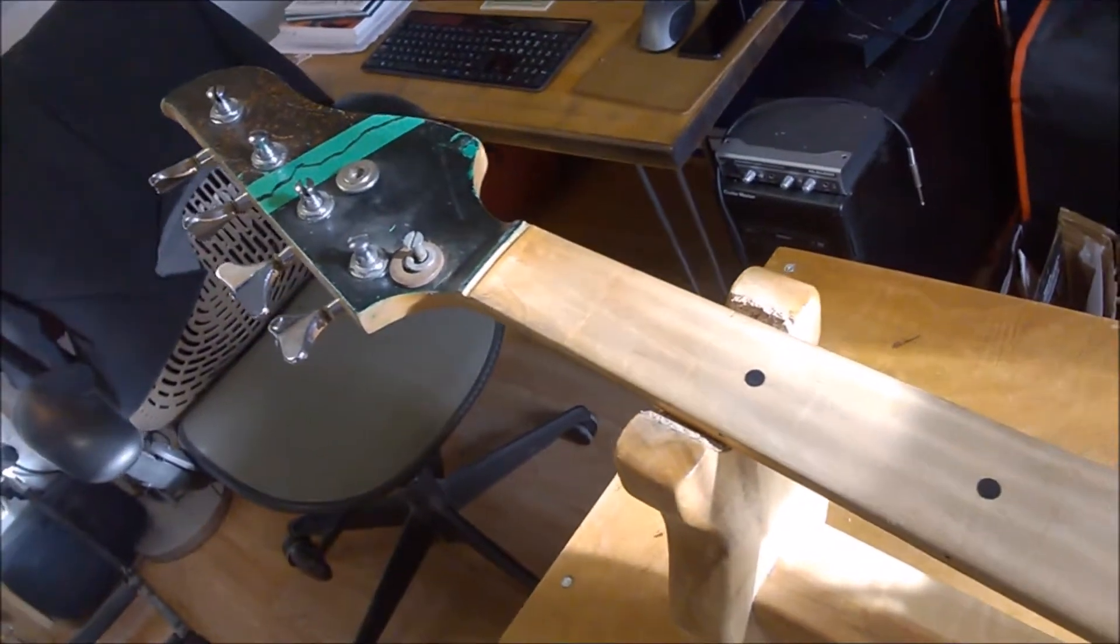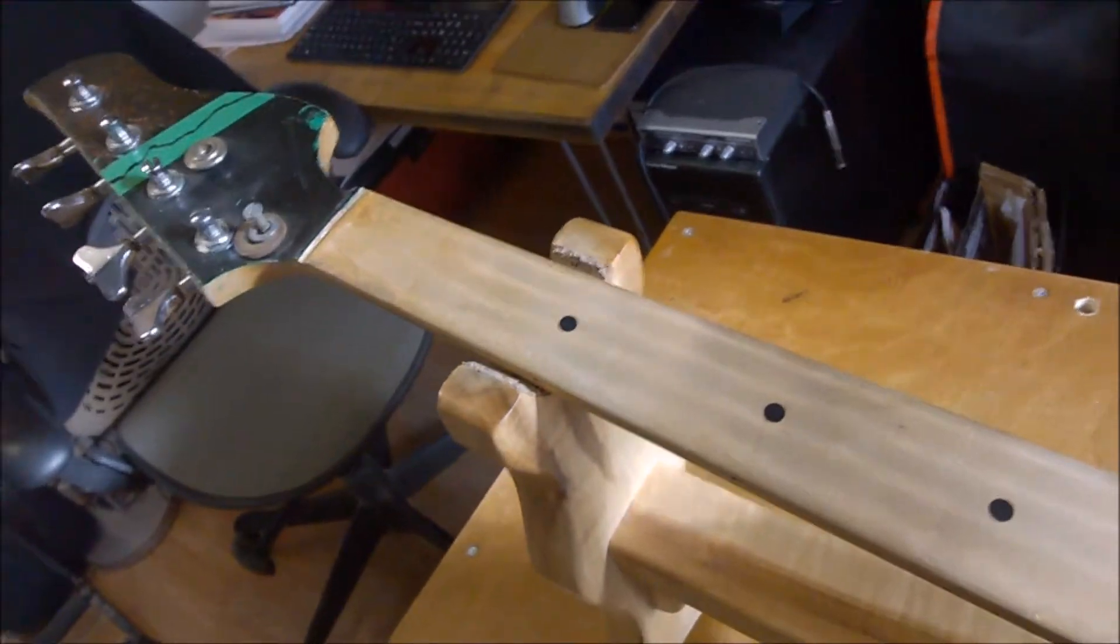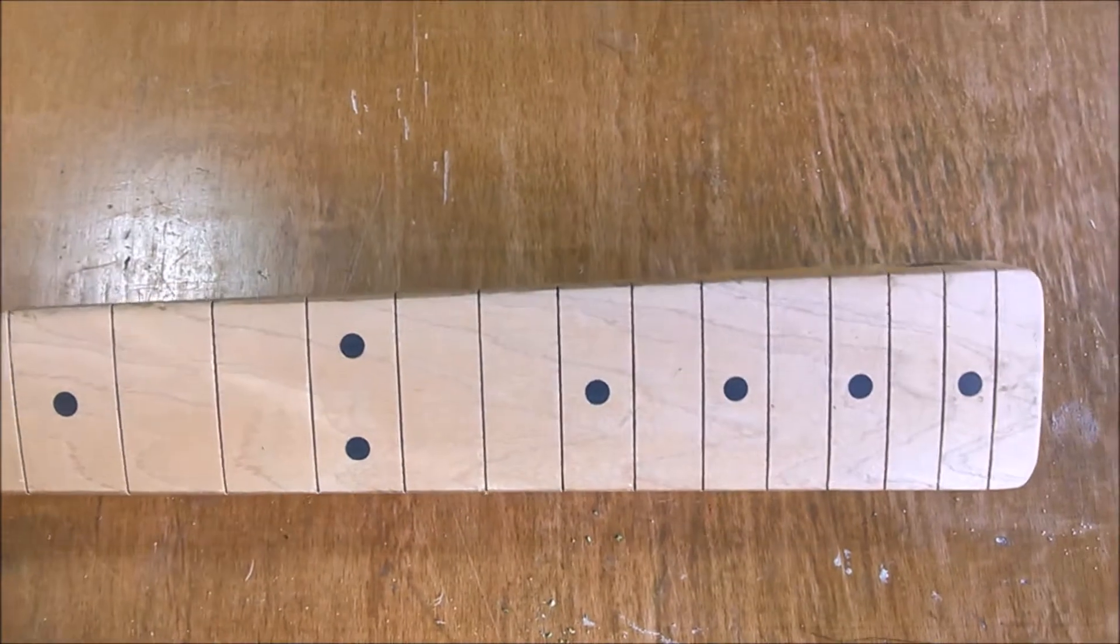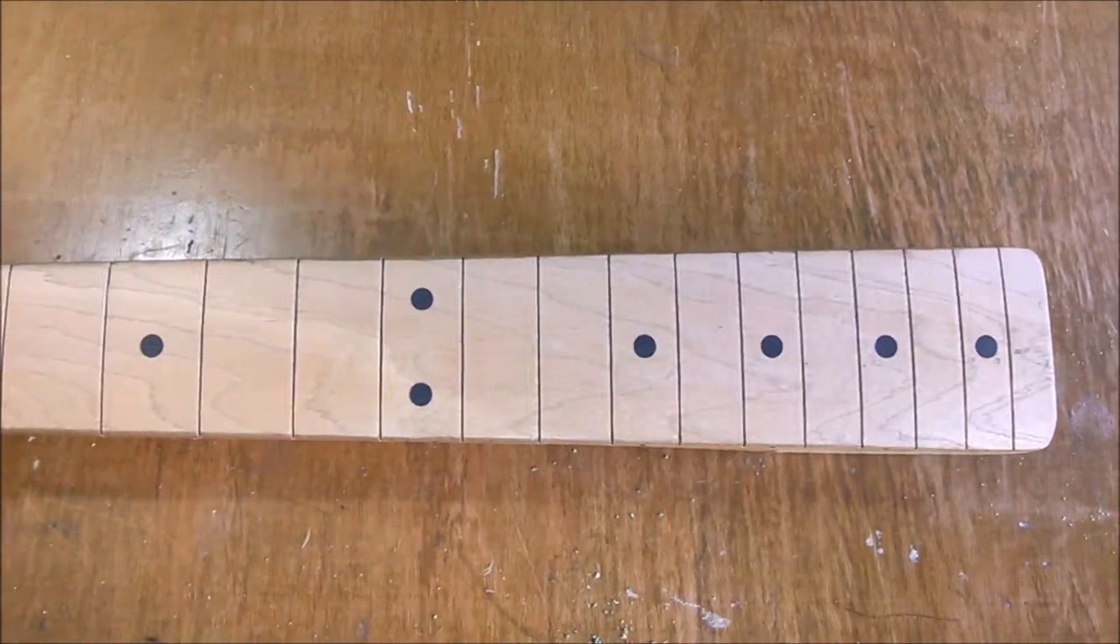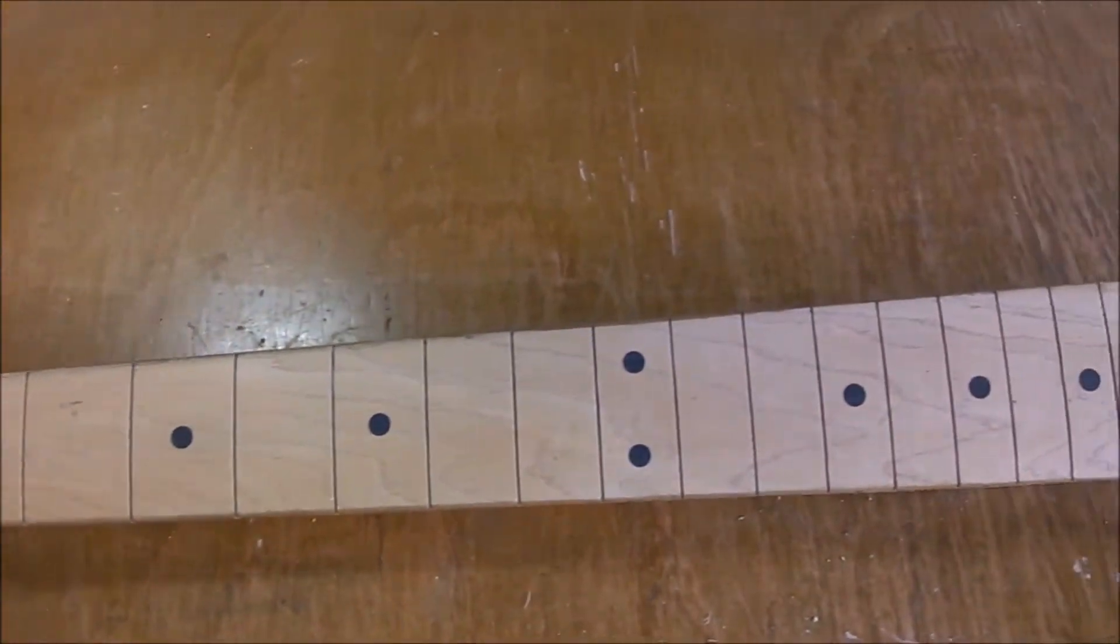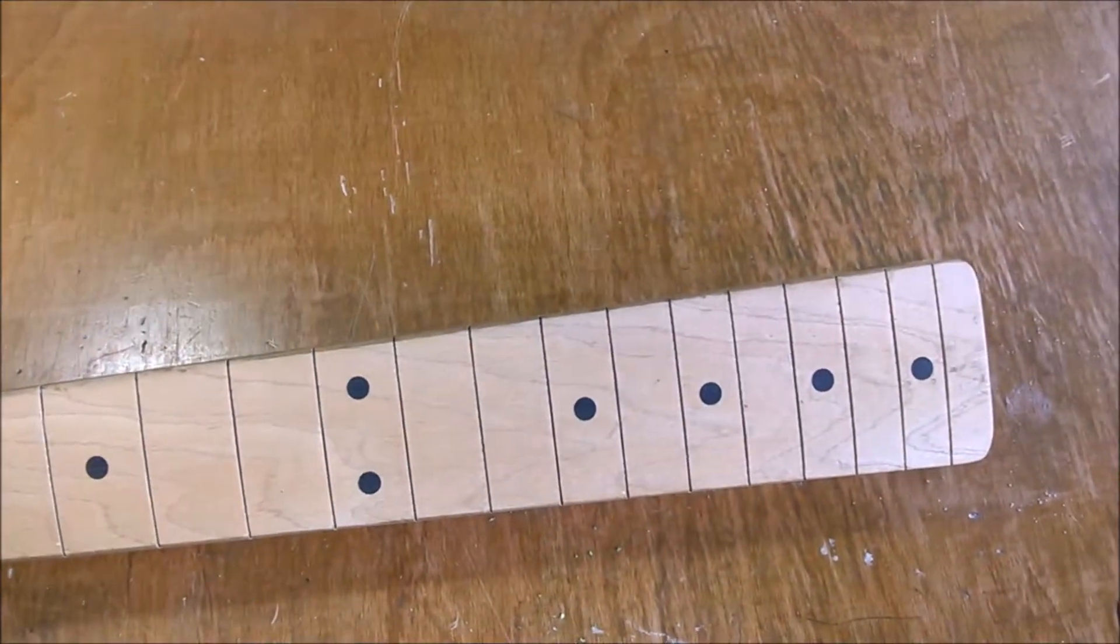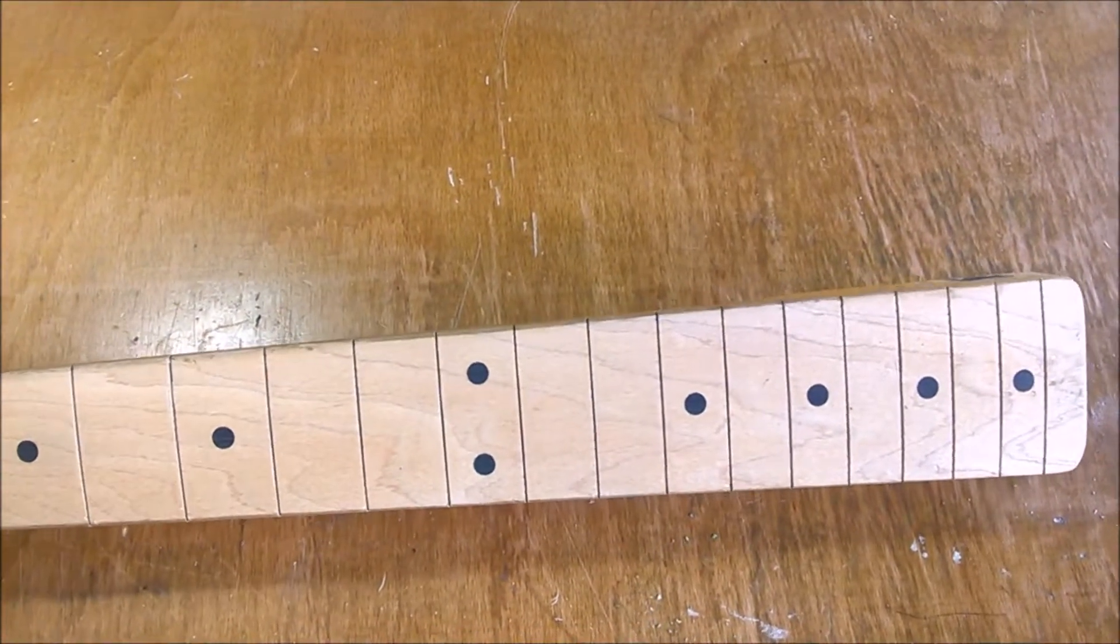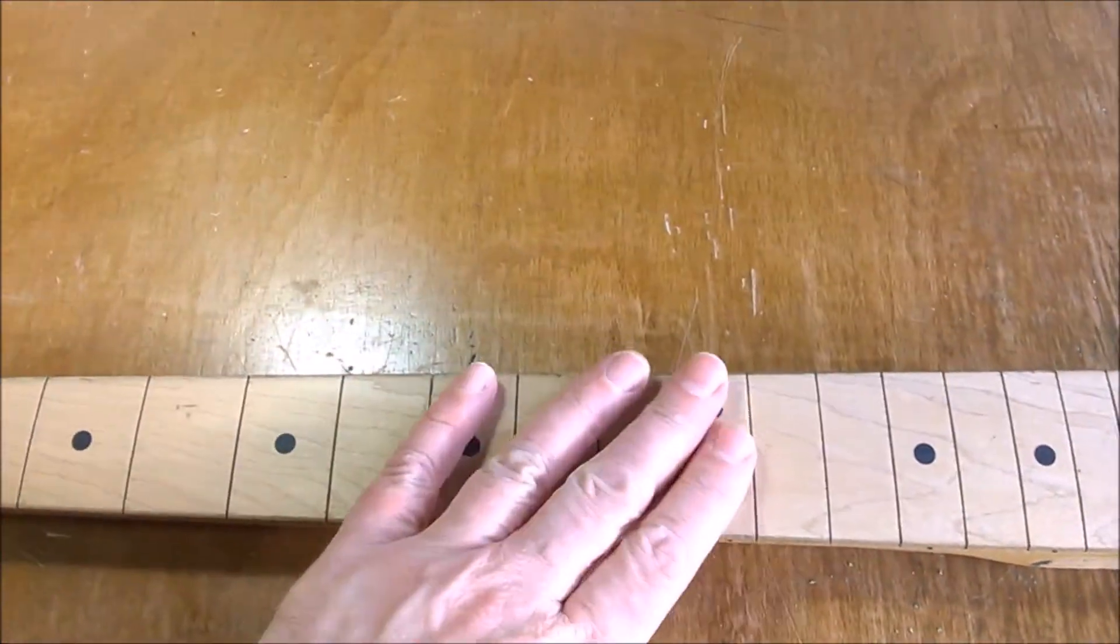Okay, we've got the fret slots cleared out of the veneer that was put in there to make this a fretless bass. I've cut the fret slots again with the fret saw and I've also radiused the fretboard.